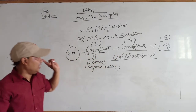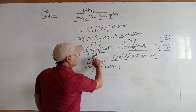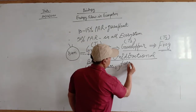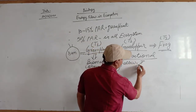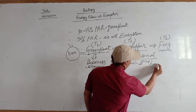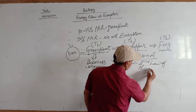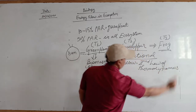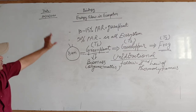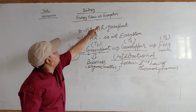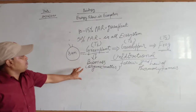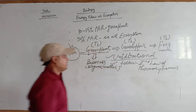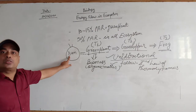This is an important point — the flow of energy is unidirectional in all ecosystems. This flow of energy follows the second law of thermodynamics. In any ecosystem, energy flow is unidirectional, and the Sun is the only source of energy.